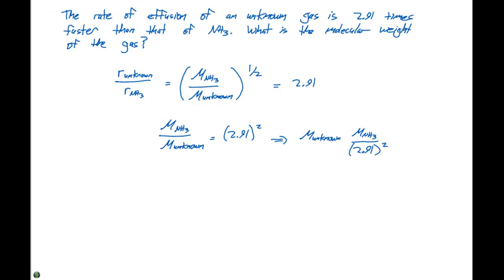If we look at the periodic table, we can determine what that molar mass of NH3 is. It's gonna be 17.0 grams per mole, divided by 2.91, that quantity squared.